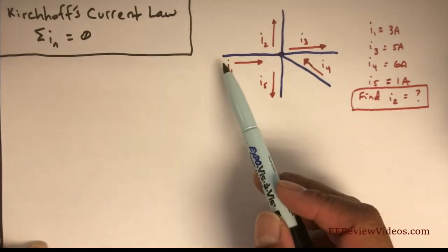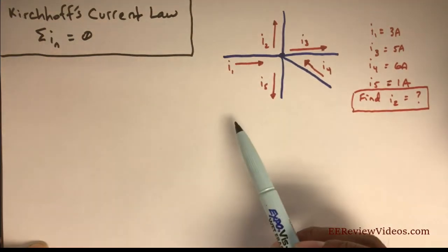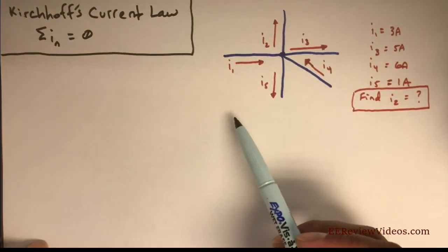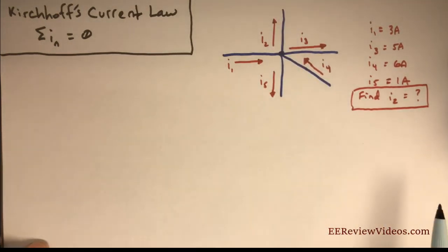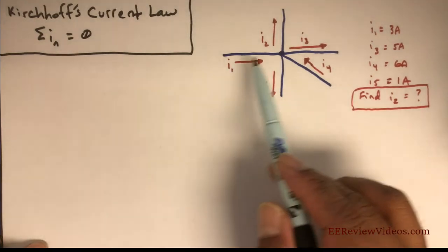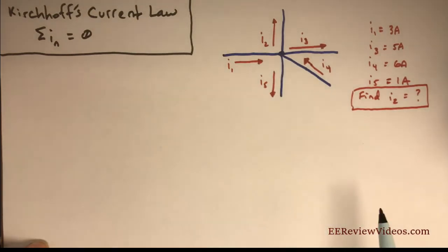Another way of saying that is the currents entering the node, if you sum them up, should equal the total of the currents leaving the node. Otherwise, we have some mysterious current escaping someplace. So all the currents that go in should be equivalent to the sum of all the currents going out.